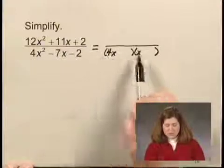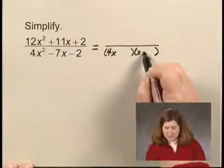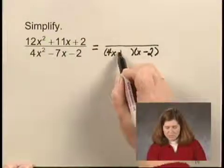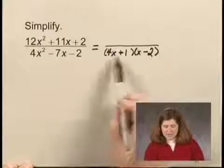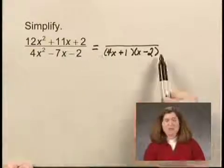But I see here that if I make this minus 2 and this plus 1, I would get 4x squared minus 7x minus 2 when I multiply these together.